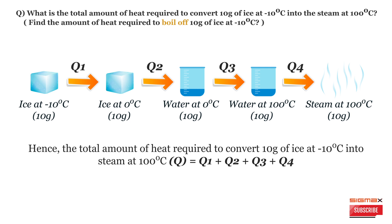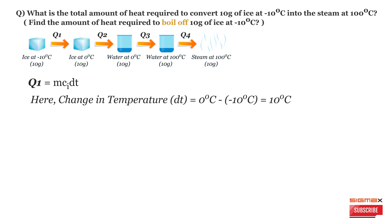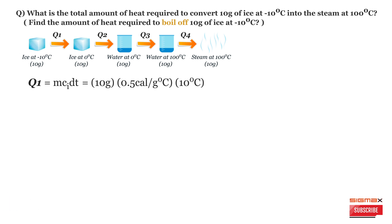Let's calculate Q1. Q1 represents the temperature change of ice from minus 10°C to 0°C, so Q1 = m × c_ice × ΔT. The change in temperature ΔT equals the final temperature 0° minus the initial temperature minus 10°, which equals 10 degrees Celsius. Hence, Q1 = 10 grams × 0.5 calorie per gram per degree Celsius × 10°C = 50 calories.